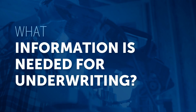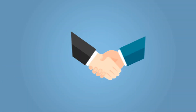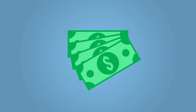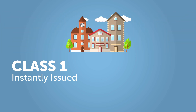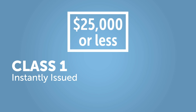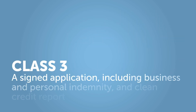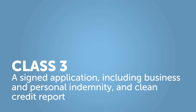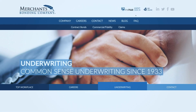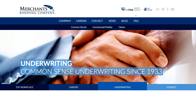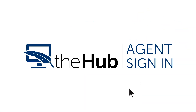What information is needed for underwriting? Underwriting of contractor license bonds can vary depending on the guarantee, obligee, and bond amount. Generally, contractor license bonds can be instantly issued when a county, city, or town is named as the obligee and the bond amount is $25,000 or less. Other contractor license bonds where a federal or state agency is the obligee may require a signed application, including business and personal indemnity, and qualifying personal credit. Nearly all contractor license bonds can usually be issued within minutes on Merchants website, the Hub.